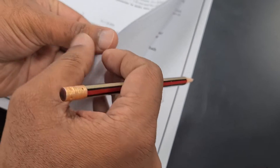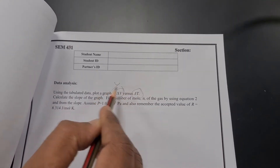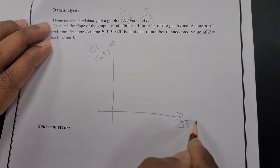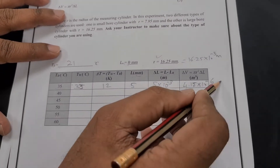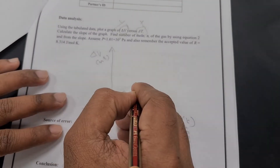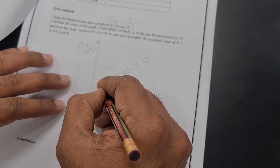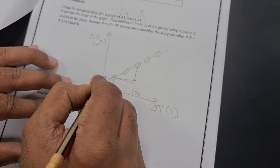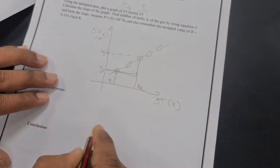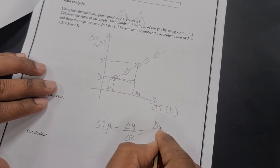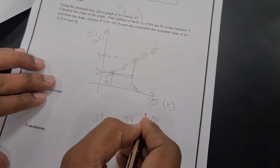Once you fill the table, draw the graph. You are going to plot ΔV versus ΔT — ΔV on the y-axis in units of m³, and ΔT on the x-axis in Kelvin. Use all the table values to fix points on the graph paper, connect them with a straight line using your ruler, and then choose any two points on the line. Label them as (x1, y1) and (x2, y2) to calculate the slope: slope = ΔY/ΔX = ΔV/ΔT.